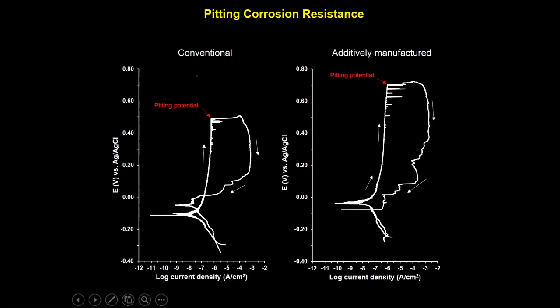The additively manufactured sample has a pitting potential almost 250 millivolts higher than that of the conventional material, which means the additively manufactured material has a very high resistance to pitting corrosion. The reason behind this behavior is the presence of some inclusions inside the material.